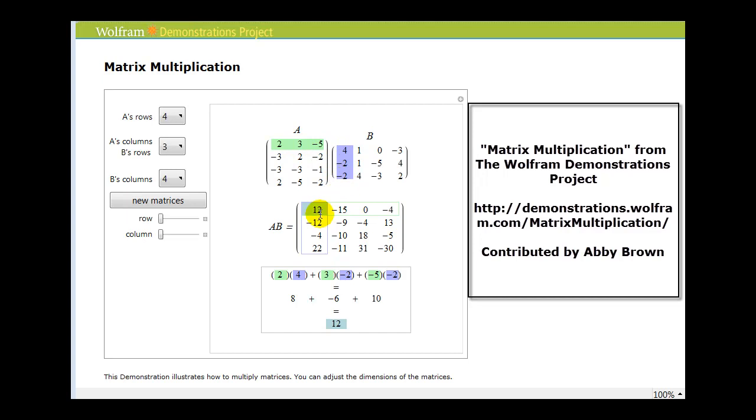For example, this is row one, column one. Therefore we find the value of this element by multiplying row one by column one. To multiply these together, we multiply the first number times the first number, the second number times the second number, and the third number times the third number as we see down here. Then we find the sum of those products and that's our element for that location.